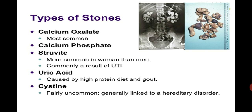Struvite stones are commonly a result of UTIs. They do not have any common shape but have many corners, making them a very dangerous type of stone. Next are uric acid stones, caused by a high protein diet and gout. Then we have cysteine stones, which are fairly uncommon and generally linked to a hereditary disorder.